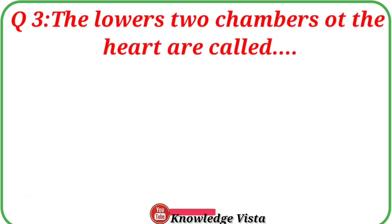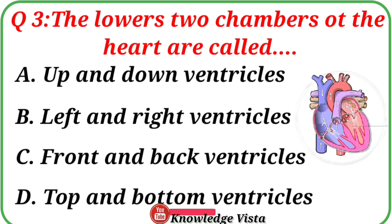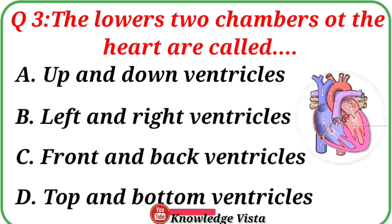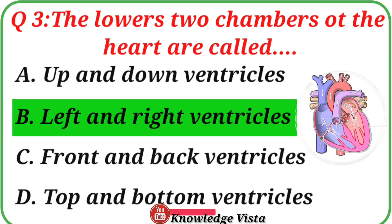Question No. 3. The lowest two chambers of the heart are called. Your options are: A. Up and down ventricles, B. Left and right ventricles, C. Front and back ventricles, D. Top and bottom ventricles. Correct answer is option B: Left and right ventricles.